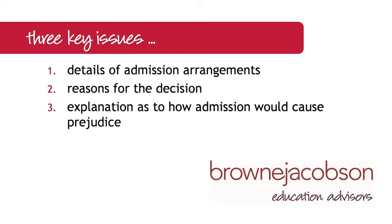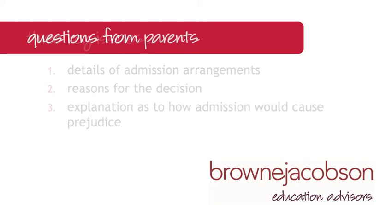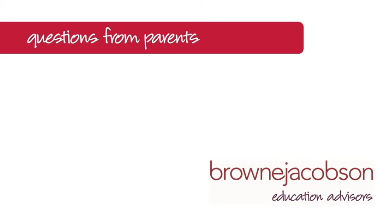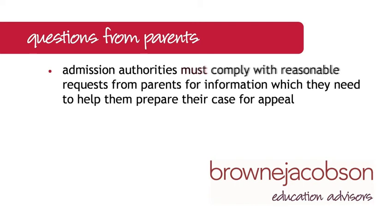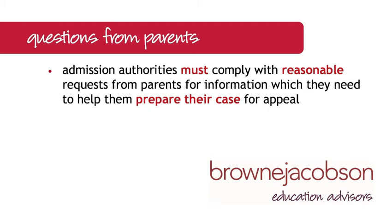Before moving to evidence gathering outside the prejudice statement, let's look at questions from parents. This can be quite difficult for admissions authorities. Paragraph 2.8 of the appeals code says that admission authorities must comply with reasonable requests from parents for information which they need to help them prepare their case for appeal. The code doesn't explain what it means by 'reasonable' or what is required for parents to prepare their case versus what they would simply like to have. My advice is to answer as many questions as possible, and for any questions not answered in advance, be prepared to answer them at the hearing so you cannot be criticised for failing to provide information.